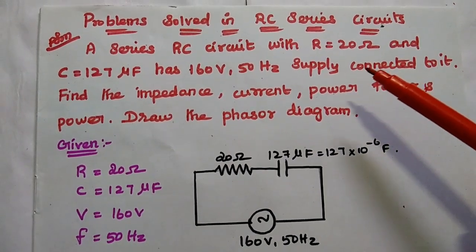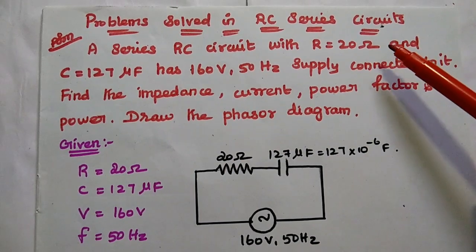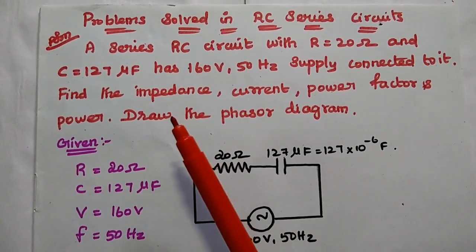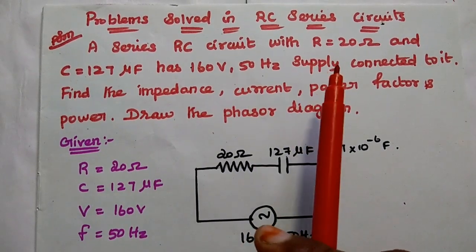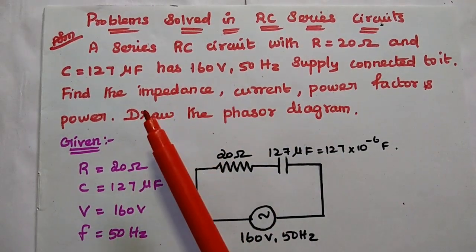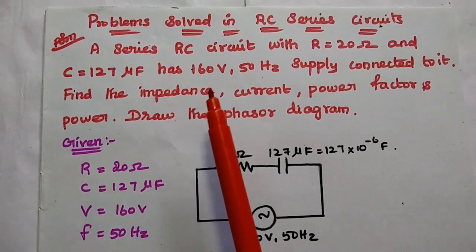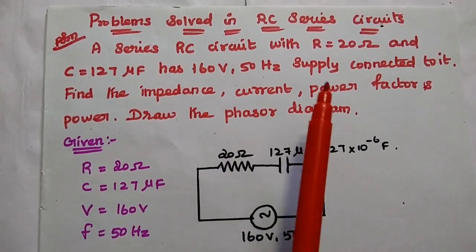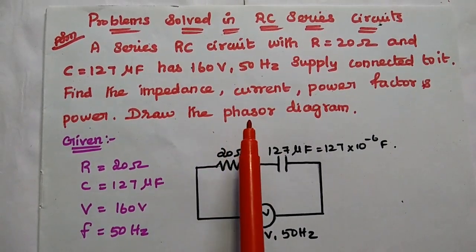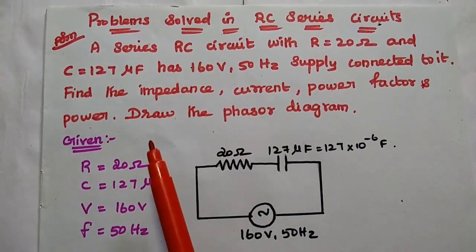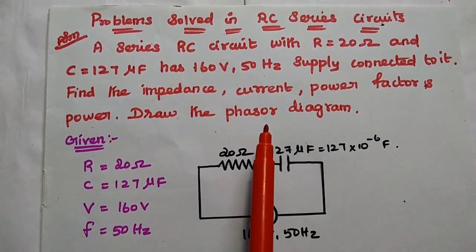Dear students, now we are going to solve important problems in RC series circuits. The first problem: a series RC circuit with resistance 20 ohm and capacitance 127 microfarad has a 160 volt, 50 hertz supply connected to it. Find the impedance, current, power factor, and power. Also draw the phasor diagram of the given RC circuit.